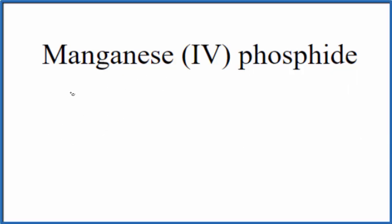In this video we'll write the formula for manganese IV phosphide. So first off let's write the element symbol for manganese, that's Mn, and then phosphide that's from phosphorus so that's just going to be P.